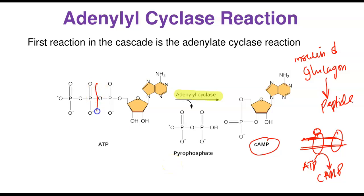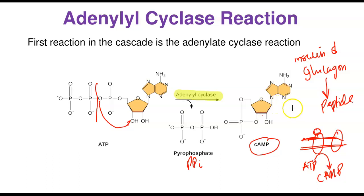What adenylyl cyclase does is break the phosphate bond in ATP to release pyrophosphate (PPi). The remaining phosphate group, which is free at carbon number 5, then turns back and joins at carbon number 3 to form the cyclic ring — that is why we call it cyclic adenosine monophosphate (cAMP). This cAMP then begins to activate a cascade of protein kinases that phosphorylate other proteins, eventually leading to activation or inactivation of downstream enzymes.